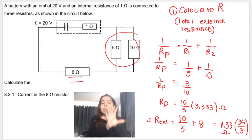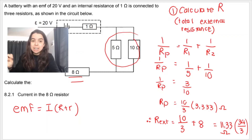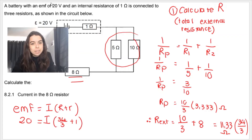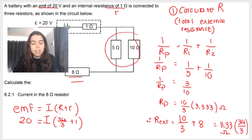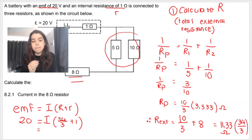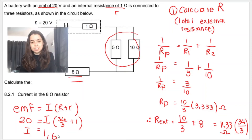Now that I've calculated big R, I'm going to use that in my EMF formula to calculate I, or current. I've first written the blank formula, then subbed in. The EMF is 20 — I subbed that in the place of EMF. The internal resistance, baby R, is 1 — I subbed 1 in the place of baby R. And the 34 over 3 is big R — I subbed that in the place of big R. Now I need to solve for I. You're basically going to add 34 over 3 to 1, do that addition sum first, and then say 20 divided by that sum. When I do that, I get 1.62 amperes. Remember your unit — if you don't put your unit, you're going to get the question wrong.